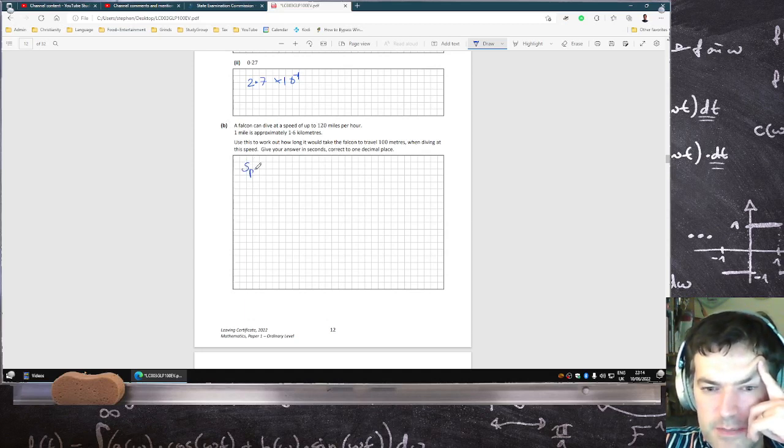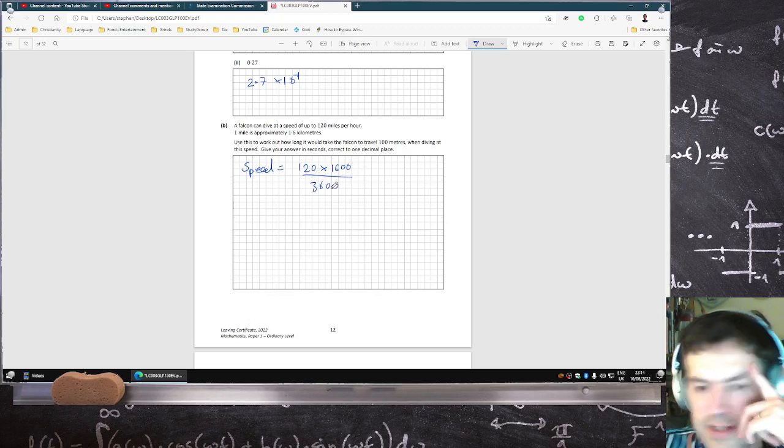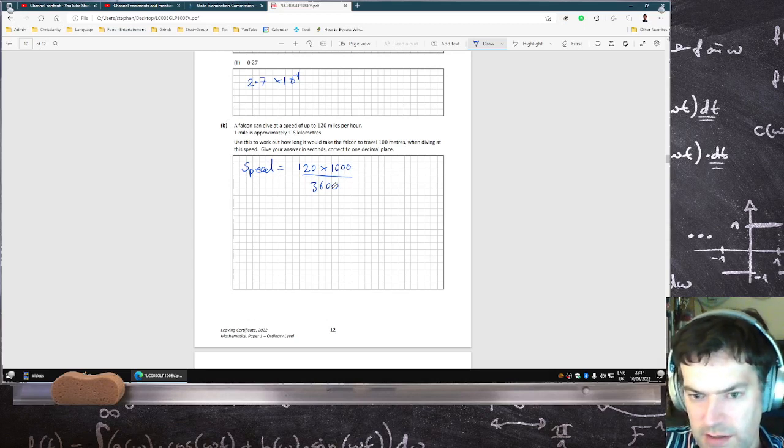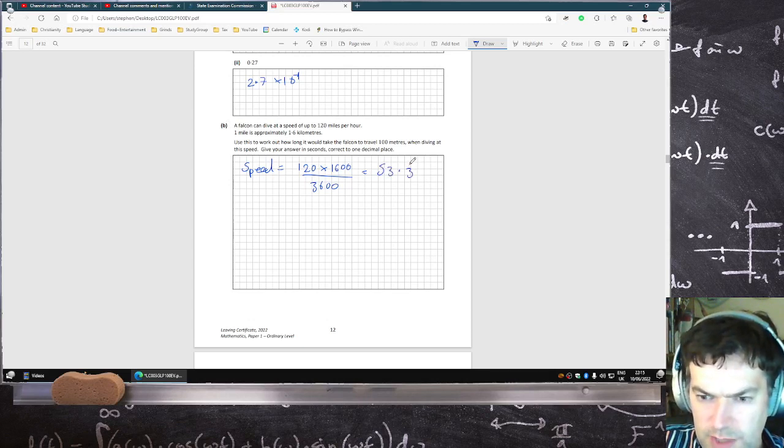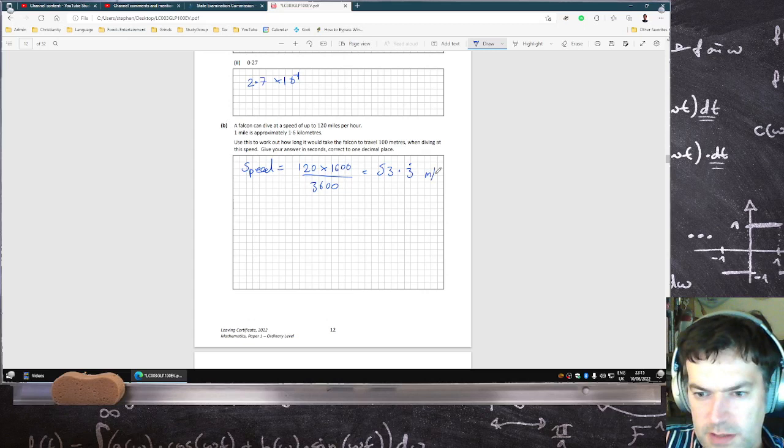So the speed is 120 miles, and a mile is 1.6 kilometers or 1,600 meters, per hour which is 3,600 seconds. So in meters per second, its speed is 53.3 recurring meters per second.